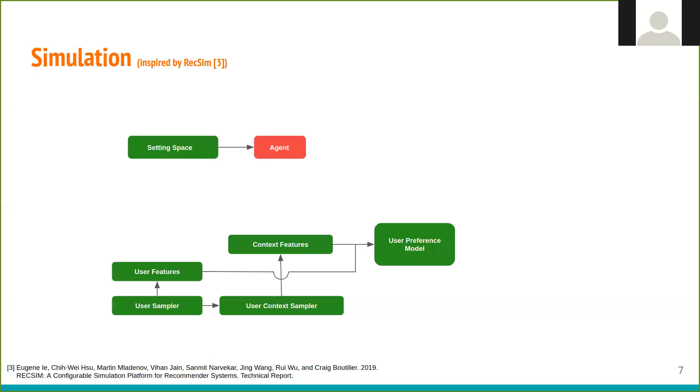I will give now a high-level overview of the simulation. We have an agent that has access to setting space from which it will choose settings for recommendation. We have a user sampler, which generates or selects a user for a new iteration of the simulation. And the context sampler, corresponding to that user. From them, we obtain current user and context features that condition user preference model.